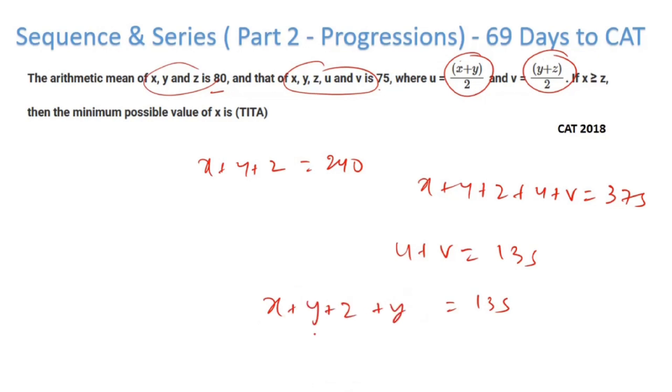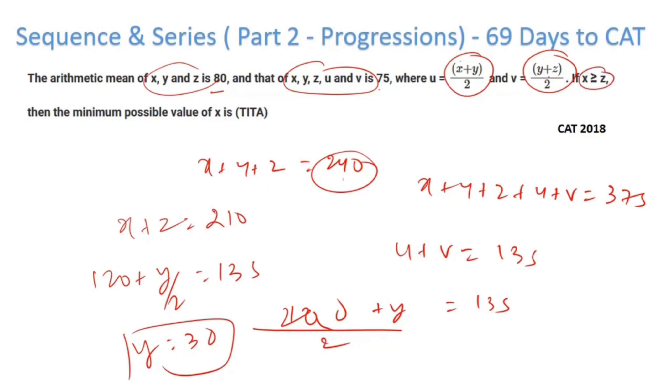Now you take the difference, you'll get u + v = 135. u is (x + y)/2, v is (y + z)/2. You just sum it up, that becomes x/2 + y + z/2 = 135. Now this becomes, just solve it, (x + y + z + y)/2.